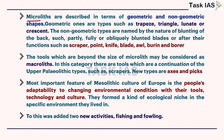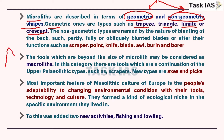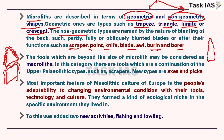Microliths are described in terms of geometric and non-geometric shapes. Geometric ones are trapezoids, triangles, lunate, and crescent - you can draw a triangle with some spikes showing retouching, and similarly trapezoids. Non-geometric tools are scrapers, points, knives, blades, burins, and borers. You can draw these tools as well. For tool study, take a quarter-size paper sheet and draw different tools starting from Paleolithic, Mesolithic, and Neolithic - only then you can compare, as some tools will be common.